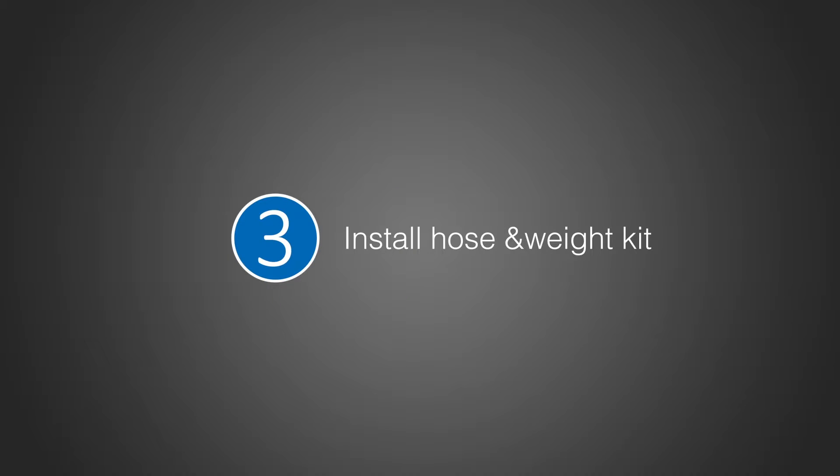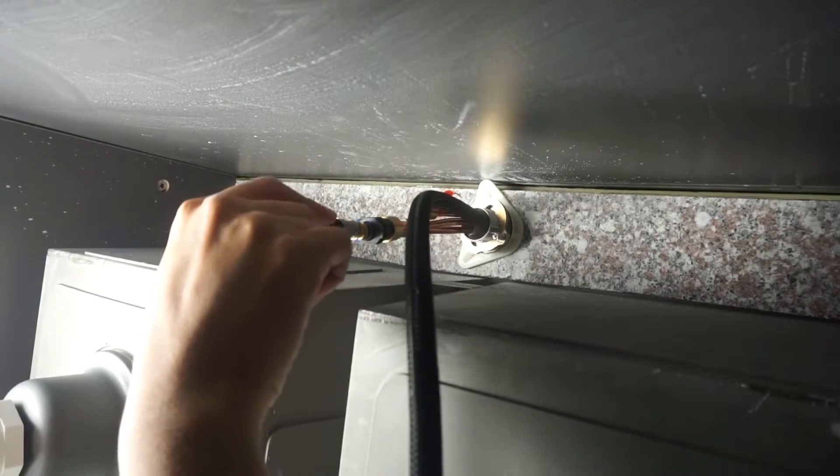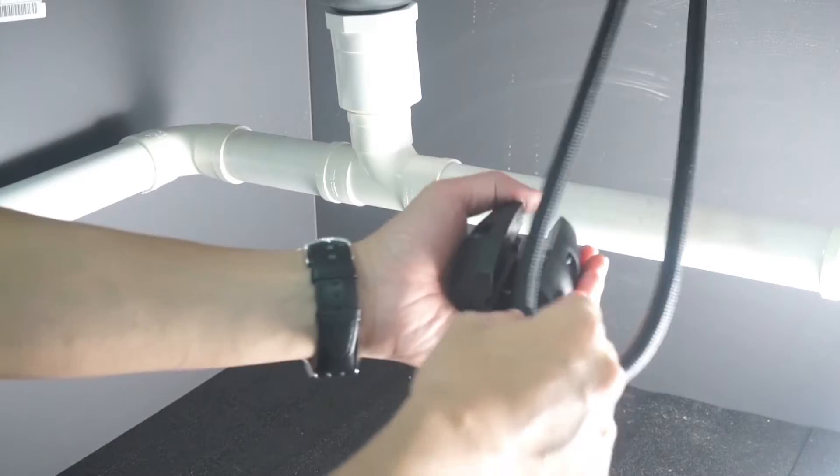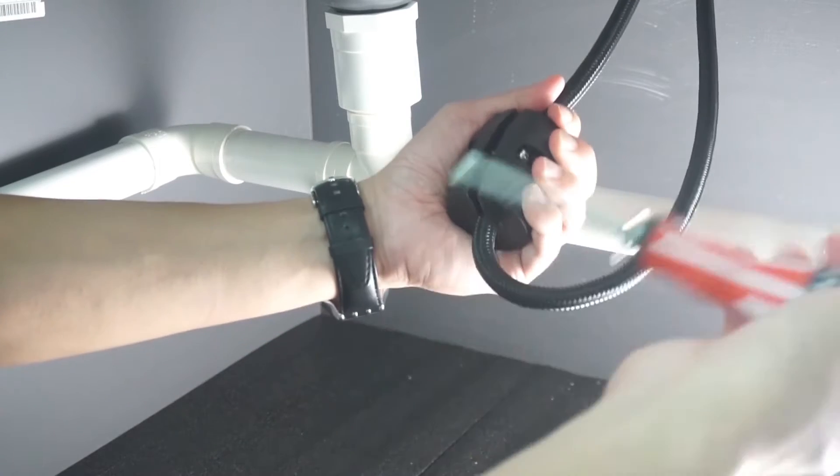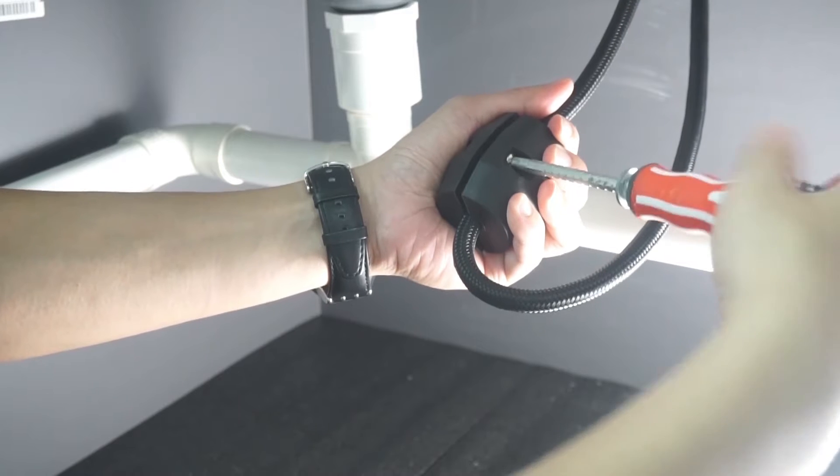Install hose and weight kit: Connect the pull-down hose into the hose connector until you hear a clear sound. Proper installation of the hose weight kit ensures that the spray head retracts smoothly.